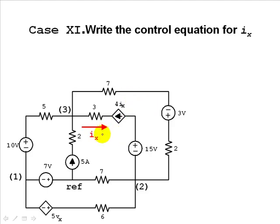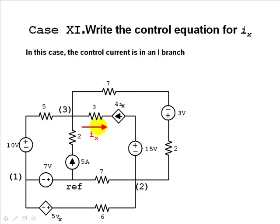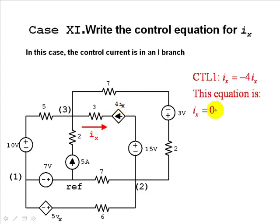What if the current that controls this current source is chosen to be the current in the same branch? That seems weird. This current Ix is a current in an I branch, so this current equals negative 4·Ix, meaning Ix equals negative 4·Ix. The only solution to this equation is that the current is permanently zero.